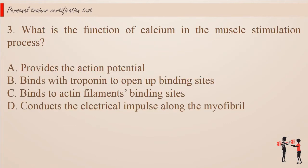Question 3. What is the function of calcium in the muscle stimulation process? a. Provides the action potential. b. Binds with troponin to open up binding sites. c. Binds to actin filament binding sites. d. Conducts the electrical impulse along the myofibril.